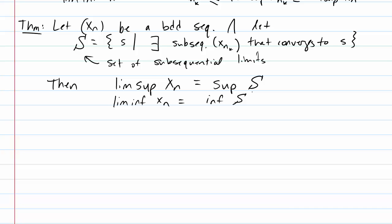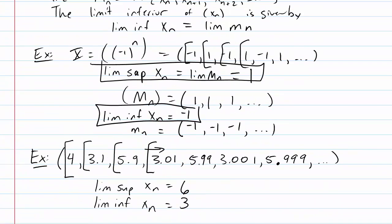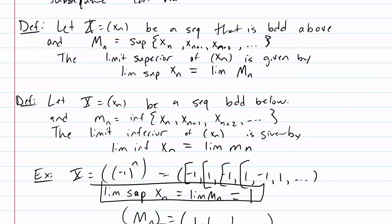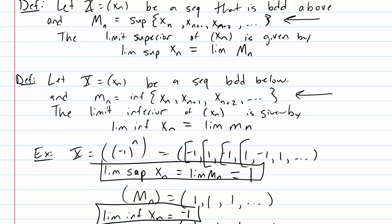The definition given in the text is much more confusing than thinking of it in terms of the sequences M_n and m_n — taking the supremum or infimum of the tail of a sequence, progressively shortening the tail. That's a better way to think about lim sup and lim inf.